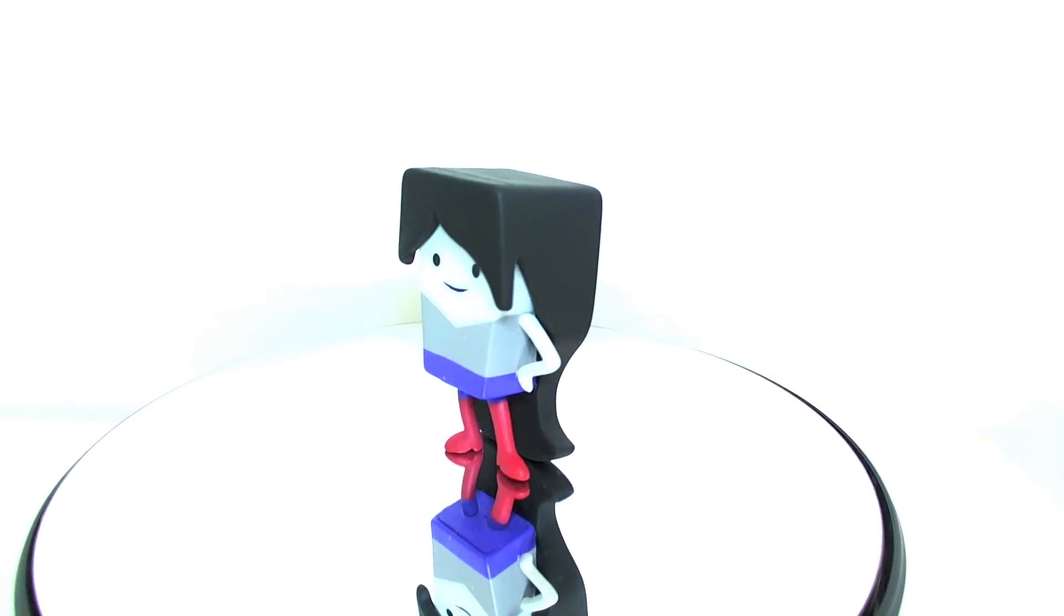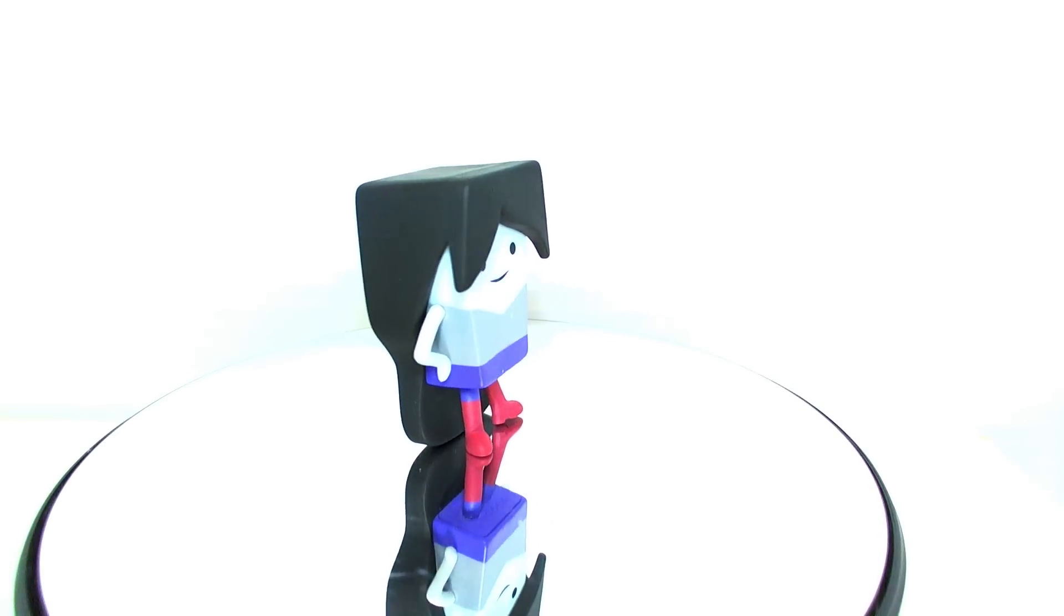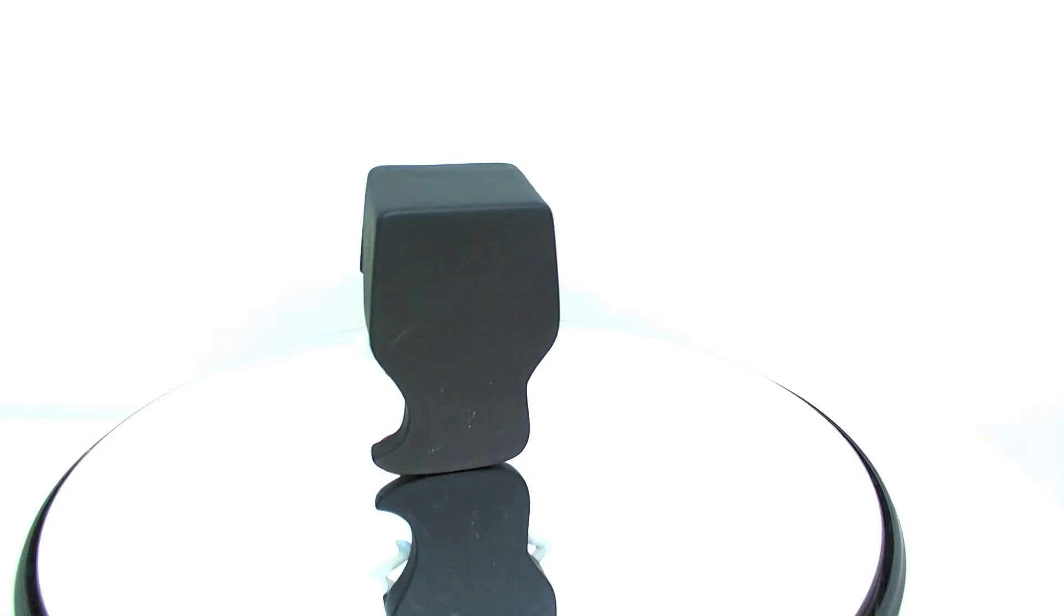All right, moving on to our 360 spin. Here we have Marceline. She is very rectangular. Very sort of angular design, which I guess is cool if you're into that sort of thing. She has a very large mass of black hair, which covers her entire back. And then a little bit of it is there in the front.